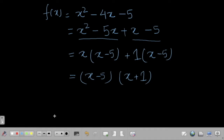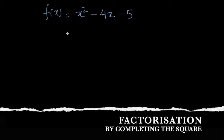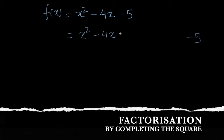Now let's see the second method — completing the square. What we are going to do is add and subtract a term to the expression. Let's write our equation: x² - 4x - 5. We are going to add and subtract a constant term.